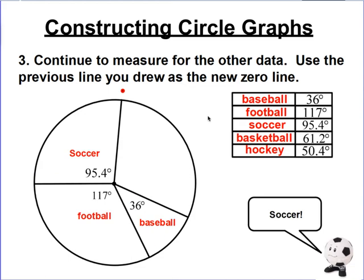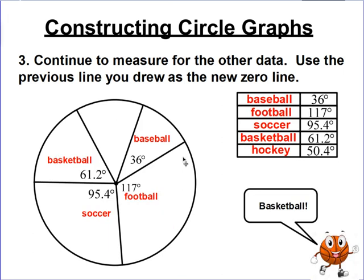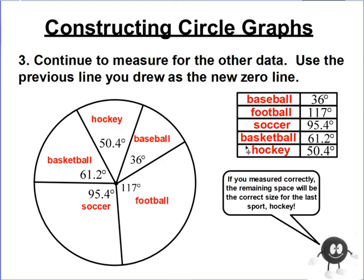So soccer should look like that, 95.4 degrees. You rotated your circle around hopefully. Basketball should look like this, 61.2 degrees. And then hockey is the remaining piece. Always measure the remaining piece to make sure it's the accurate amount. So turn and rotate and measure for hockey but that piece should be 50.4 degrees.